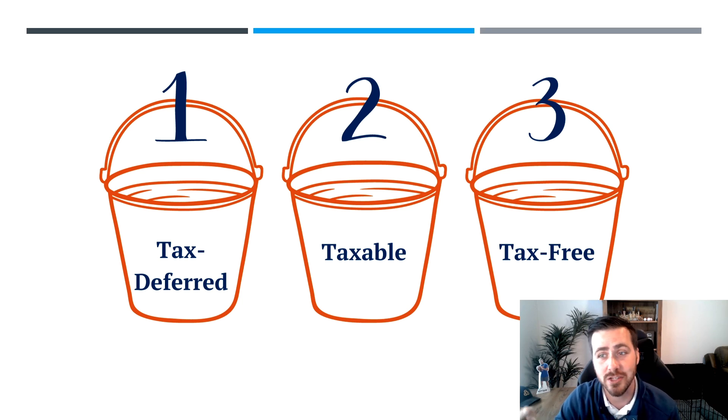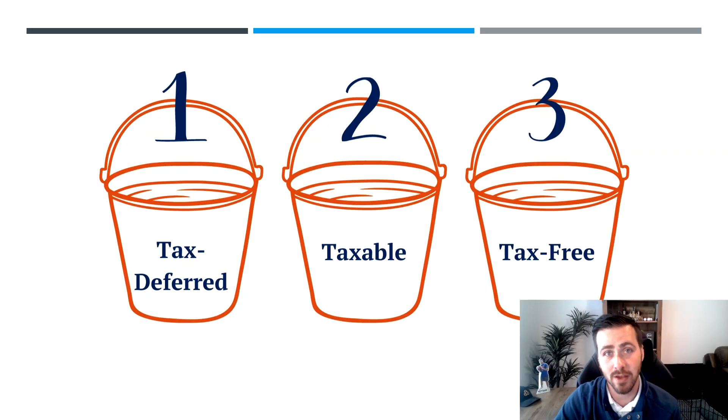The second bucket is your taxable bucket — this is a non-qualified account. The easiest way to explain it: it's like a savings account that you invest. You pay taxes on it typically every year if you have growth. The money you put in is called the cost basis — you've already paid tax on that. Any growth you typically pay tax on each year, though there may be some unrealized gains in there. It gives you some additional flexibility.